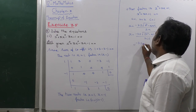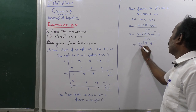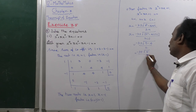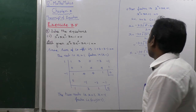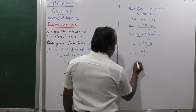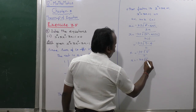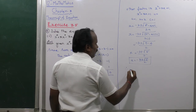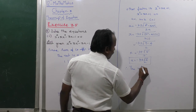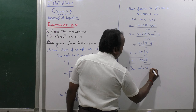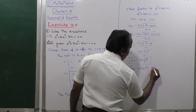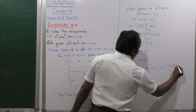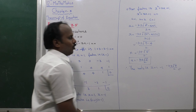Therefore x = (-3 ± √5) / 2. So all the roots are: x = 1, x = -1, and x = (-3 ± √5) / 2. That is the complete solution.